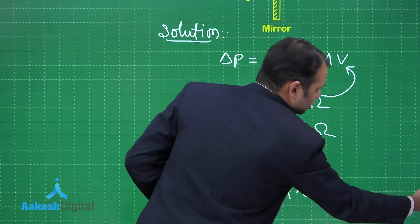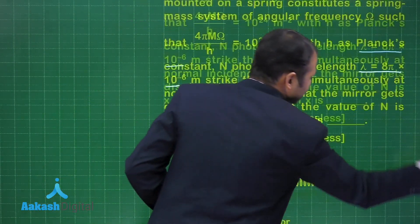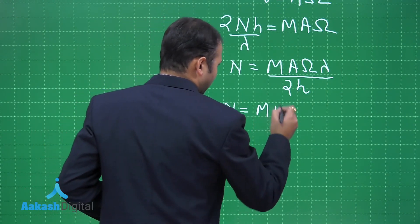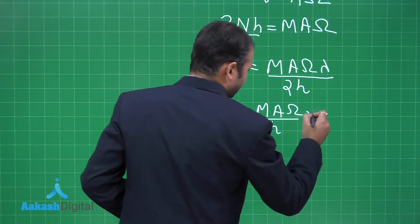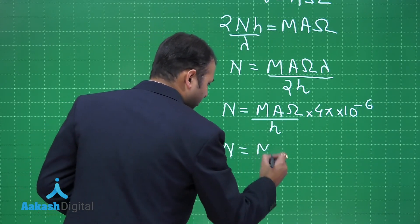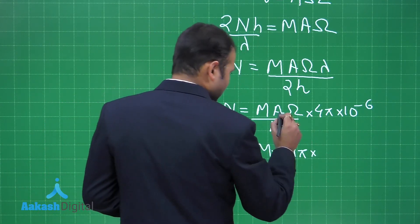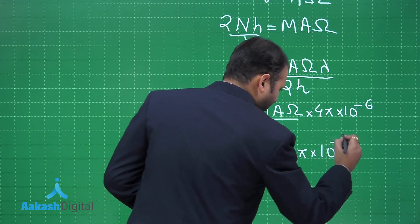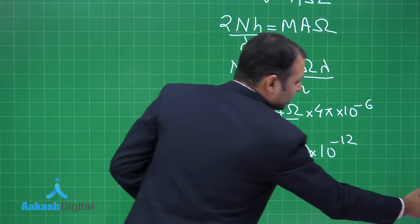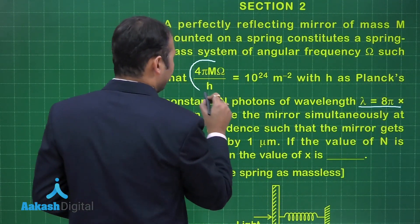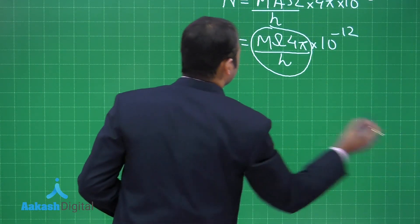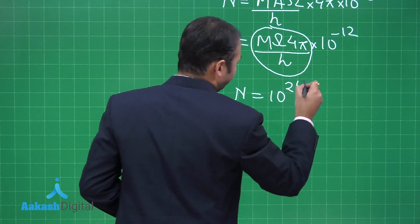Substituting the value of lambda, which is 8 pi into 10 to the power minus 6, we get n equals M omega times 4 pi into 10 to the power minus 6 times a, all divided by h. Substituting the amplitude a equals 1 micrometer equals 10 to the power minus 6 meters, this becomes n equals (4 pi M omega over h) times 10 to the power minus 12. The value 4 pi M omega over h is given as 10 to the power 24.